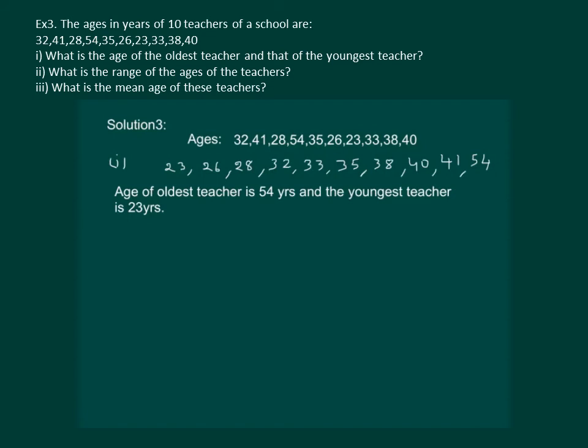Now, the second part of the same question is, what is the range of the ages of the teachers? So, simply range of ages will be the maximum or the highest age minus the lowest age. Which will be equal to 31 years.